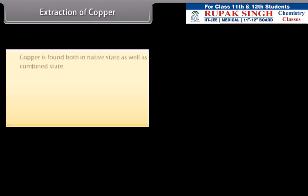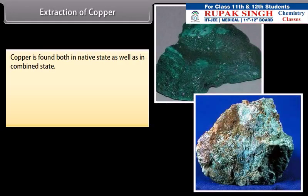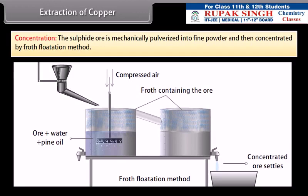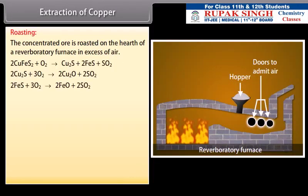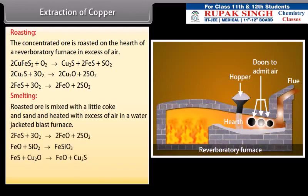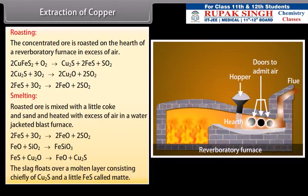Extraction of copper. Copper is found both in native state as well as in combined state. The main occurrence of copper as sulphides, oxides and carbonates. The important steps involved in the extraction of iron are: Concentration: The sulphide ore is mechanically pulverized into fine powder and then concentrated by froth flotation method. Roasting: The concentrated ore is roasted on the hearth of a reverberatory furnace in excess of air. Smelting: Roasted ore is mixed with a little coke and sand and heated with excess of air in a water jacketed blast furnace. Most of the remaining iron sulphide is converted into oxide which reacts with silica forming fusible slag of iron silicate. The slag floats over a molten layer consisting chiefly of Cu2S and a little FeS called mate.